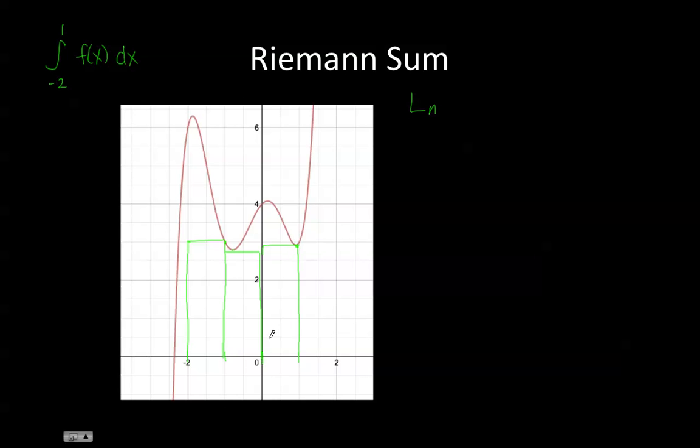So if I took the sum of these three rectangles, that would give me the lower Riemann sum for these three inscribed rectangles.